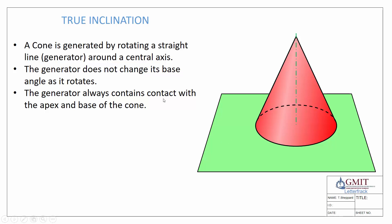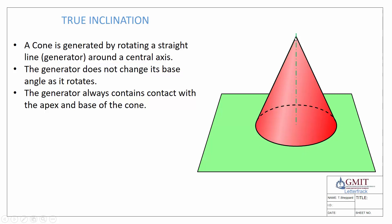We know already that a cone is generated by rotating a straight line or generator around a central axis. Here's our central axis, and we generate the cone by spinning this line all the way around. As it spins, we can see the generator does not change its base angle, and it's always in contact with the base of the cone and the apex of the cone.